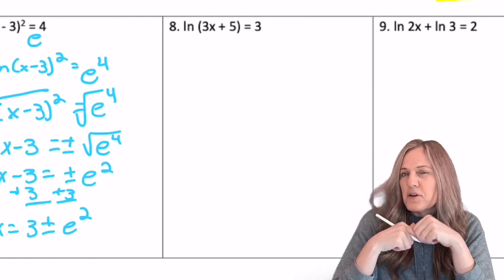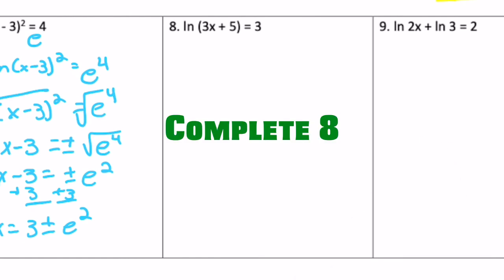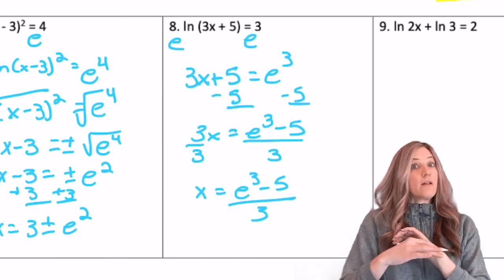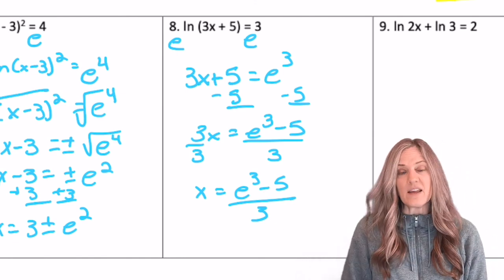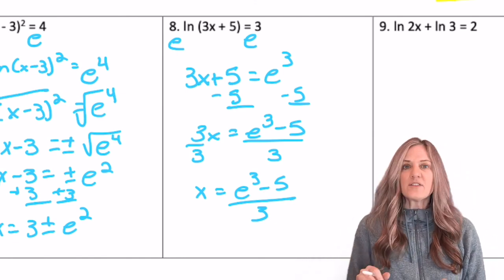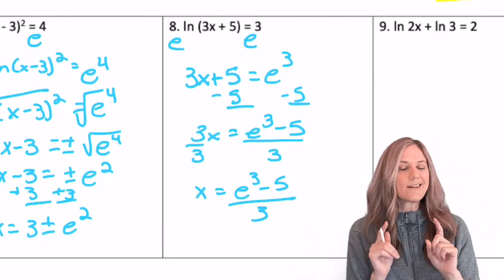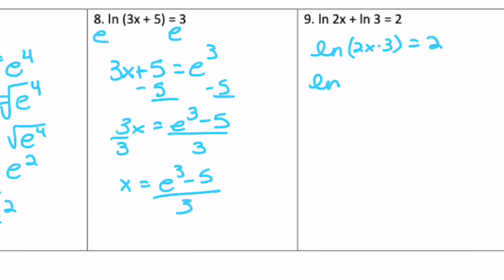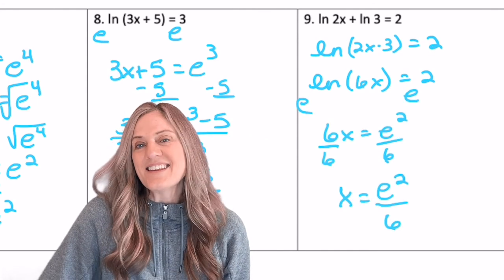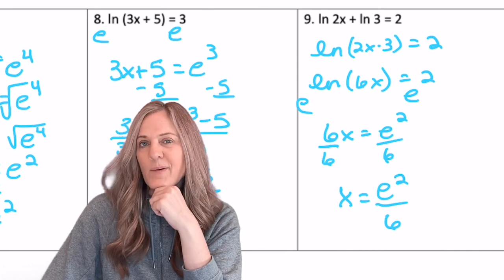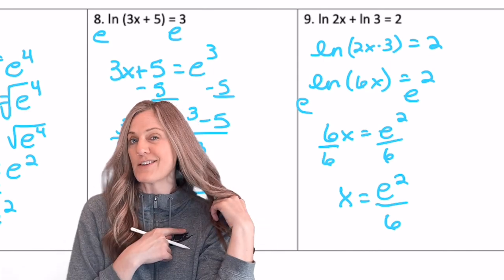Okay. On number eight, why don't you just E it? All right. X equals E cubed minus five. The whole difference there divided by three. The last problem we have to use our product property and bring that natural log together before we can E it. X equals E squared divided by six. So remember, when you have natural log and you're solving an equation, you can always just E it.